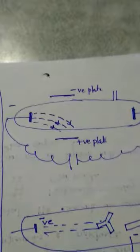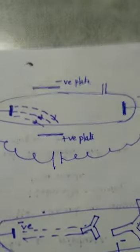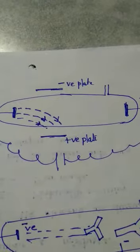And then it was seen that if two plates which are having positive and negative charges on them are brought near the discharge tube.